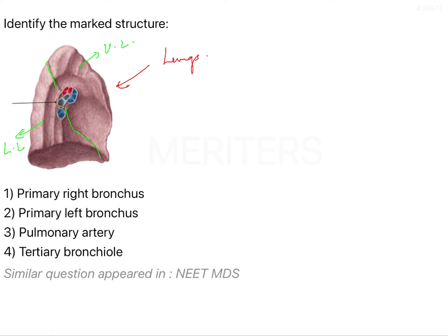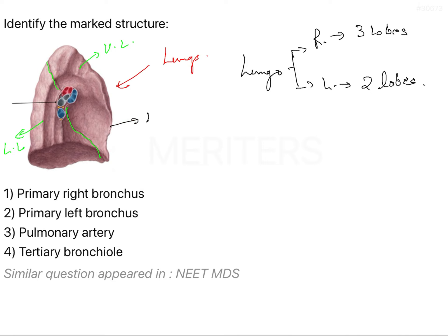As we know, the lungs are going to be right lung and the left lung. The right lung generally is going to have three lobes - there are three lobes in the right lung - and in the left lung you have two lobes. So you can identify that this is the left lung here.